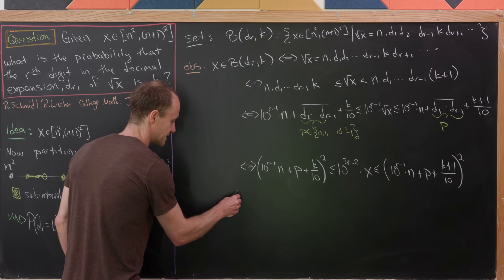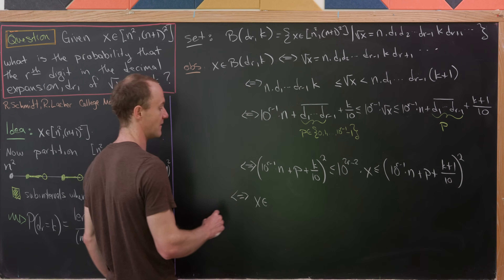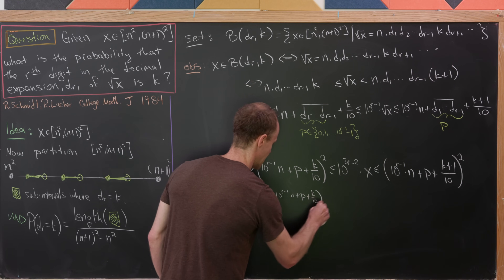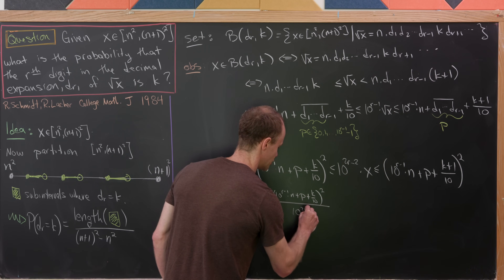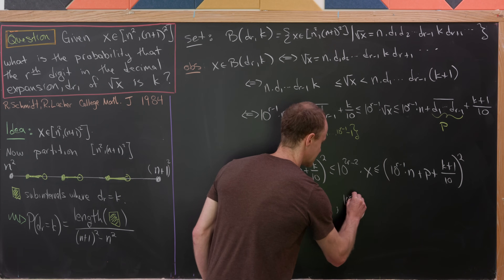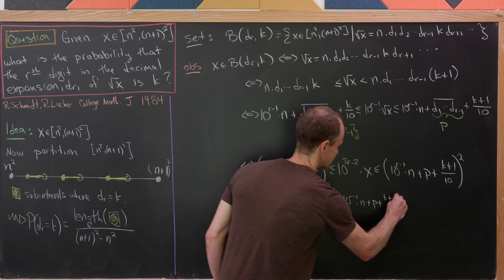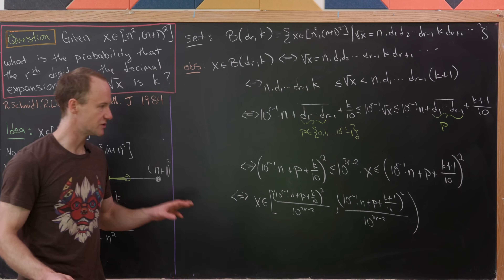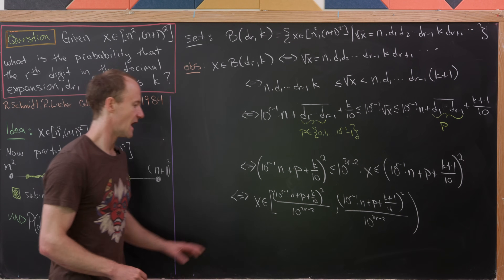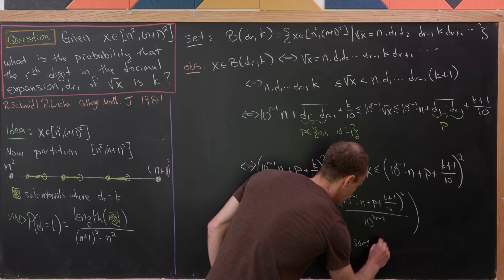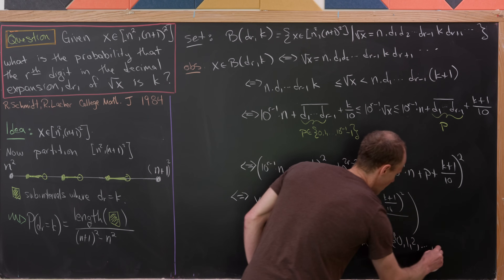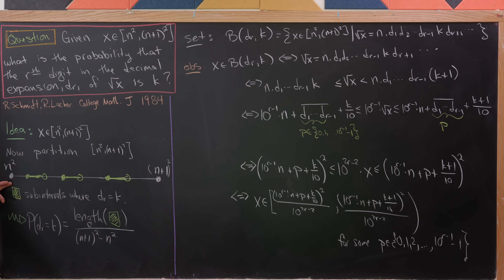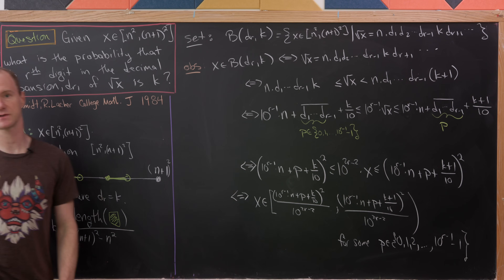Putting this in terms of the sub-interval explicitly: x is in the interval from [10^(r-1)(n + p + k/10)]² / 10^(2r-2) up to (but not including) [10^(r-1)(n + p + (k+1)/10)]² / 10^(2r-2), for some p in {0, 1, 2, ..., 10^(r-1) − 1}. This gives us a complete description of the 'good' sub-intervals where d_r = k.